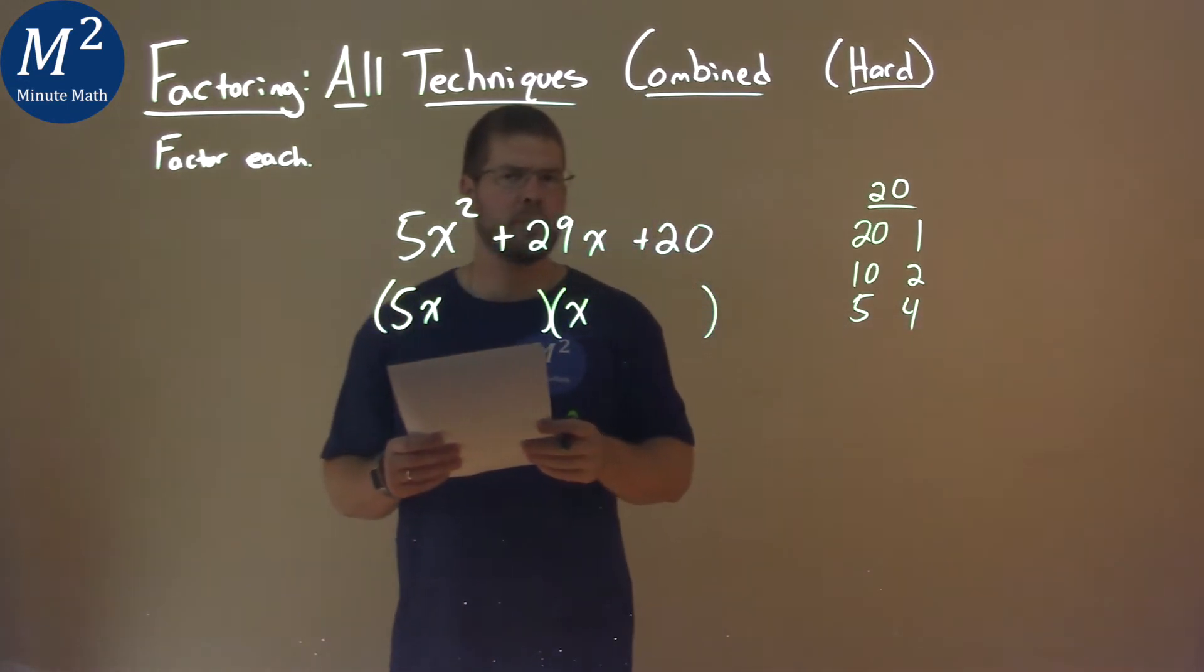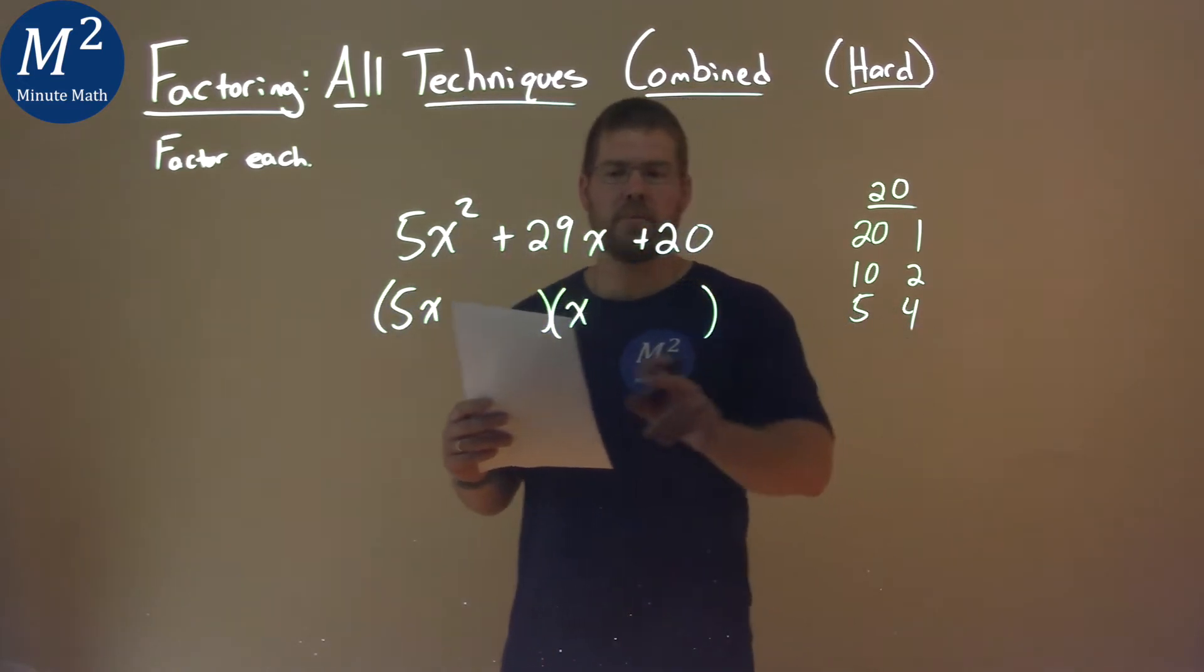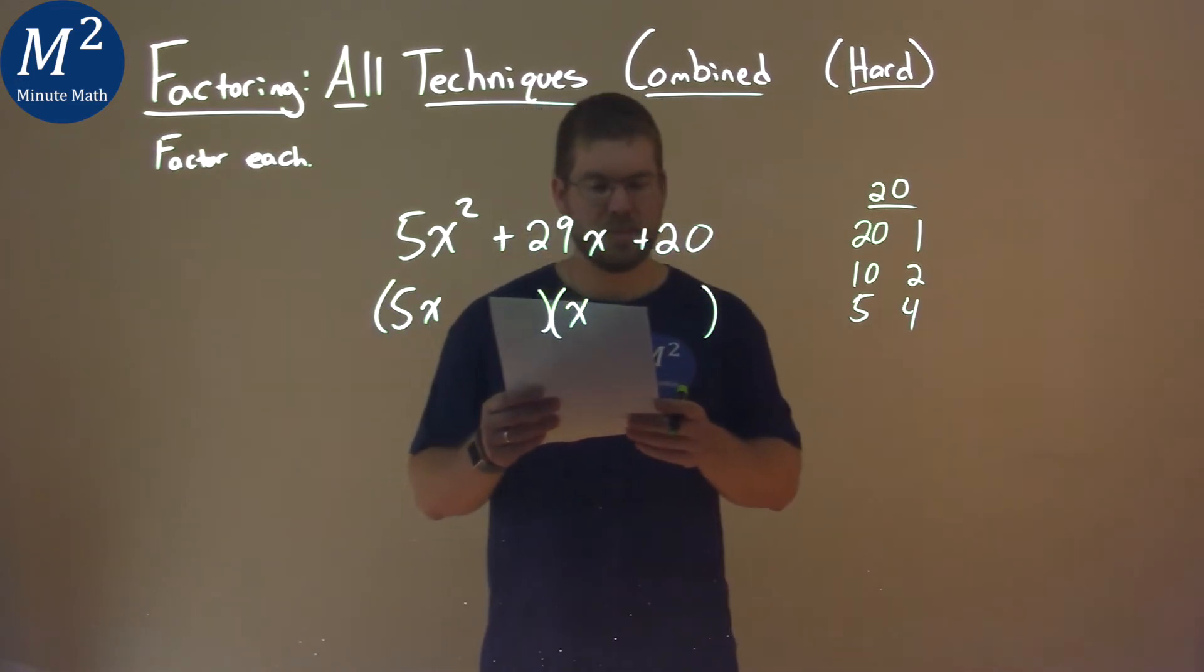So now we have to ask ourselves a kind of difficult question. 5 times which one of the numbers in a pair plus 1 times the other number in a pair add to be 29. Can you guess it?